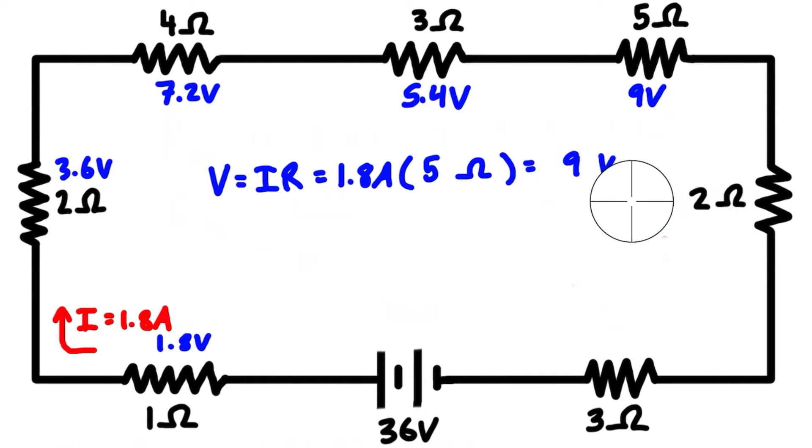We already calculated what it is for a 2 ohm resistance—it's 3.6 volts. Same down here: we've already calculated 3 ohms, which is 5.4 volts of drop.